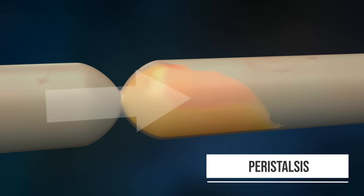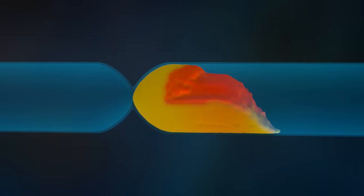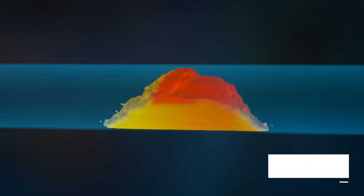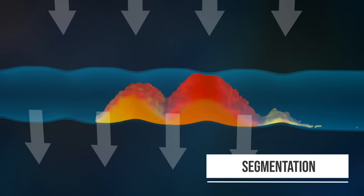As with the esophagus, the food is transported by peristalsis. In contrast, segmentation contractions serve to mix the chyme, which is shown here in yellow and red.